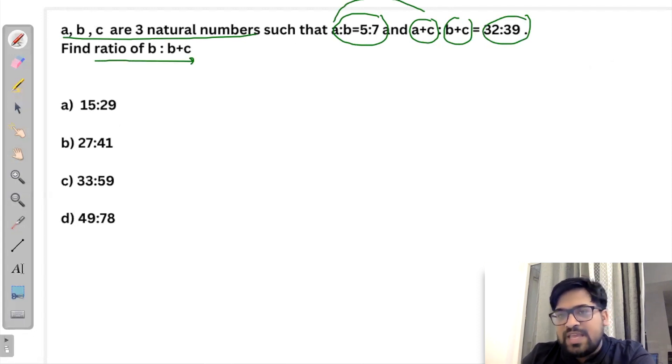So agar kishi ratio mein same increment, same value increment or same value decrement hota hai, usko baut easily solve kar sakte hai. That A is to B is 5 is to 7. The difference is 2 here. And A plus C is to B plus C, that is 32 is to 39. The difference is 7 here. So we will make that difference same.